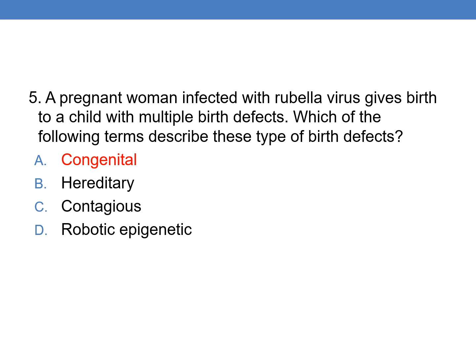Coming to the next question: a pregnant woman infected with rubella virus gives birth to a child with multiple birth defects. Which of the following terms describes these types of birth defects? Birth defects that come along with birth are called congenital, so option A is the right answer.